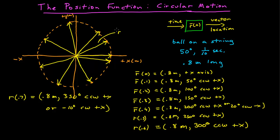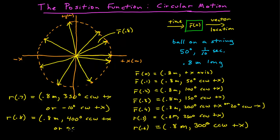Our last position is R at 0.8 seconds. R at 0.8 is 0.8 meters, and we can say 400 degrees counterclockwise from positive x — that's certainly fine if we want the degrees to go on to infinity. Or, if we don't want our degrees to go beyond 360, we can say it's 40 degrees counterclockwise from positive x.